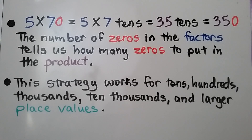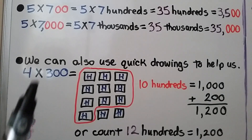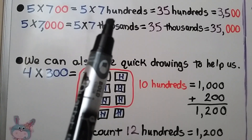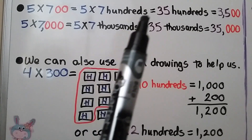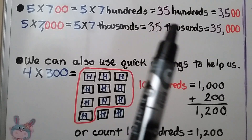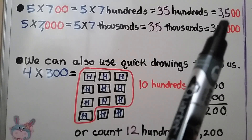This strategy works for tens, hundreds, thousands, ten thousands, and larger place values. 5 times 700 equals 5 times 7 hundreds, which equals 35 hundreds, which equals 3,500.